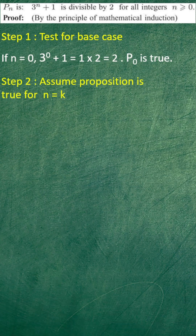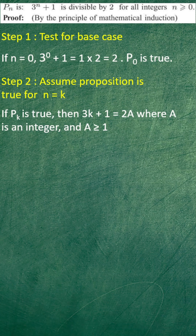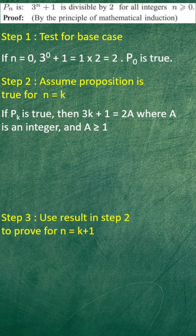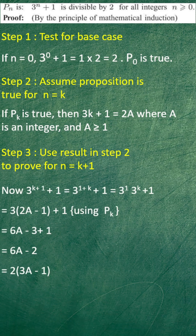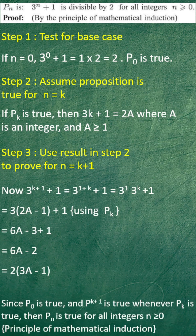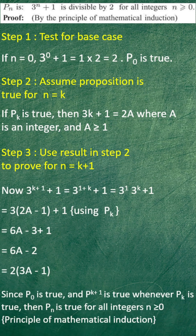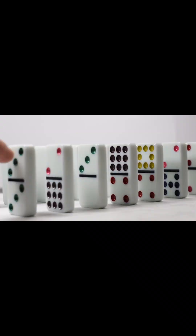The second step is to assume the proposition is true for n equals to k. In this example, it means that it's a multiple of 2 as shown. Finally, we use the result in step 2 to prove for the situation where n is equal to k plus 1. We are able to show that 2 is also a factor in this situation, proving the statement by mathematical induction.